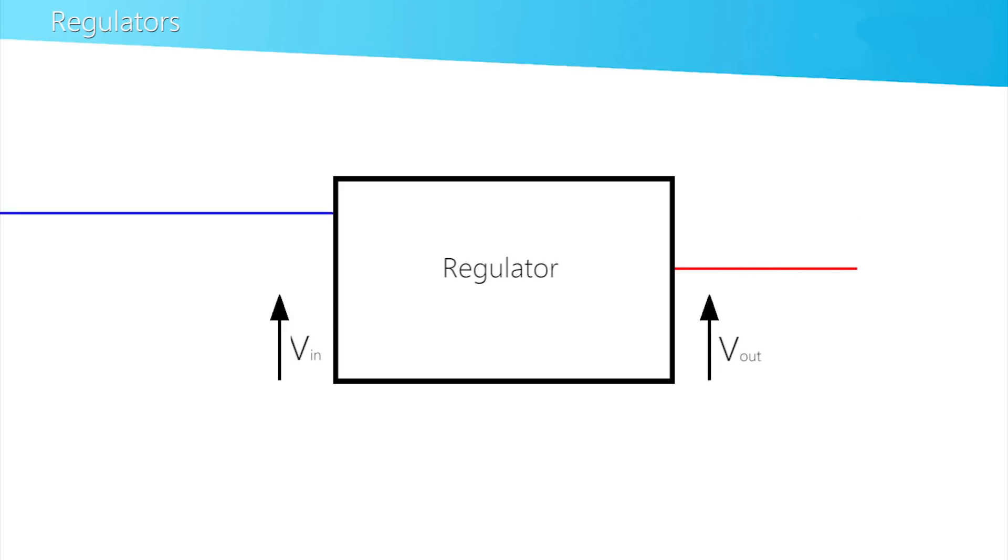One method of constraining the variation of the output of the battery is to use a regulator. The requirement for the regulator is that it can control the power available from the battery. It receives the voltage across the range of values supplied by the battery, V-in, and stabilizes this to V-out, suitable for the device.